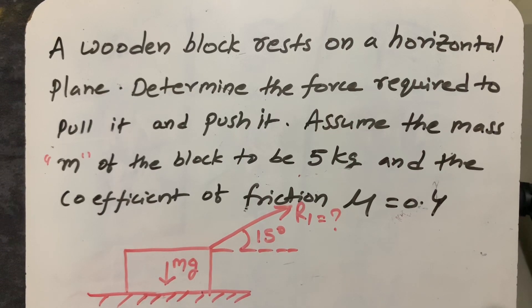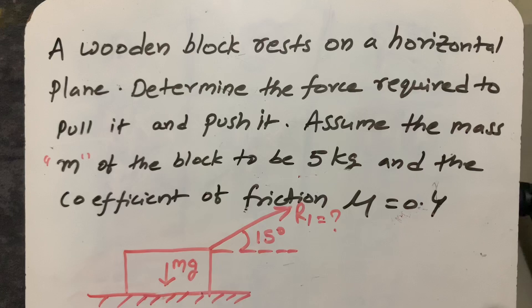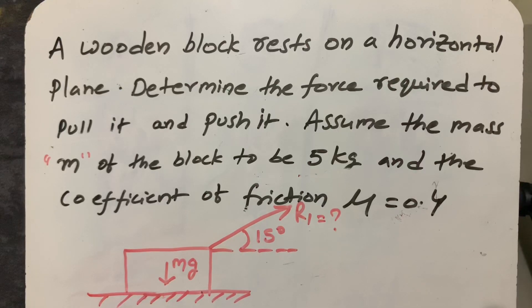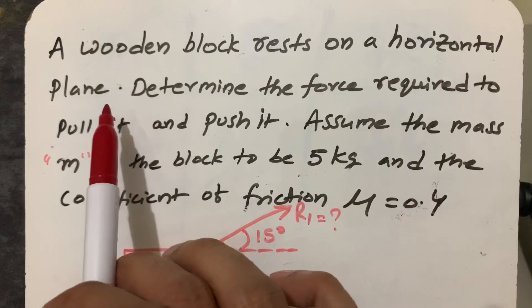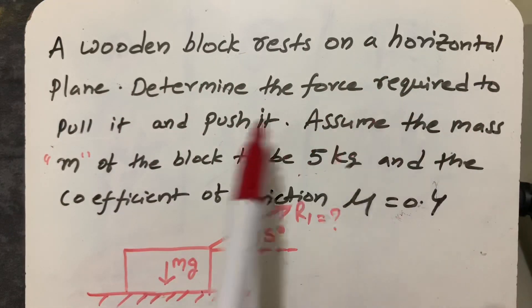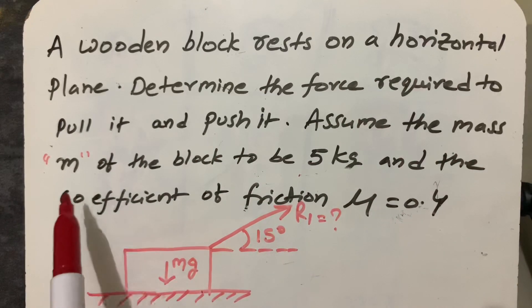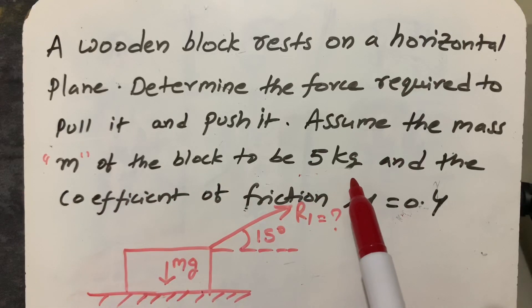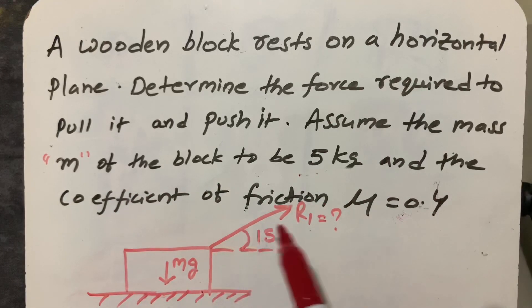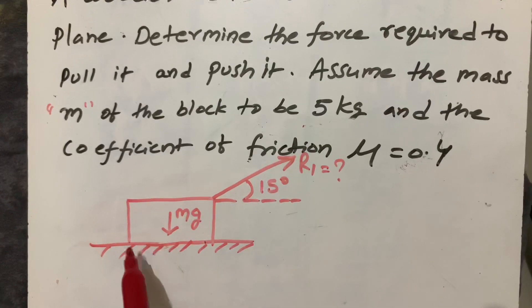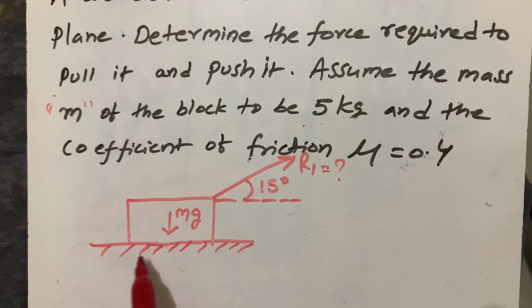Hello everyone. In this video I'm going to explain how to determine the force required to pull and push a wooden block resting on a horizontal plane. Here we are assuming the mass m of the block to be 5 kg and the coefficient of friction μ equal to 0.4.